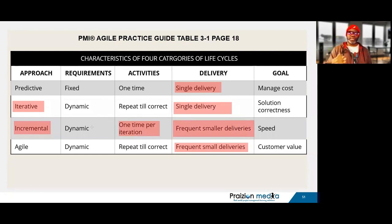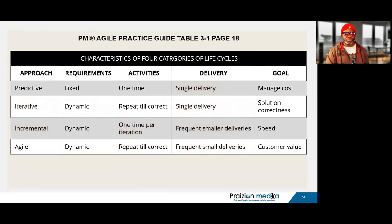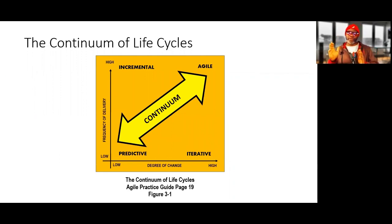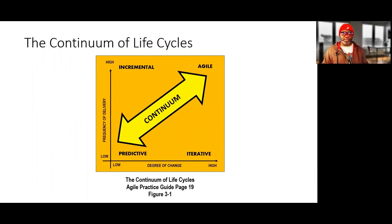It's easy to get confused with incremental and Agile, but there's a major difference. Incremental is one time per iteration; Agile is repeat until correct. Incremental is best used when the degree of change is low. Predictive has a similarity with incremental in that change is low, and a similarity with iterative in that it has a low frequency of delivery. This is a major thing to get from chapter two.